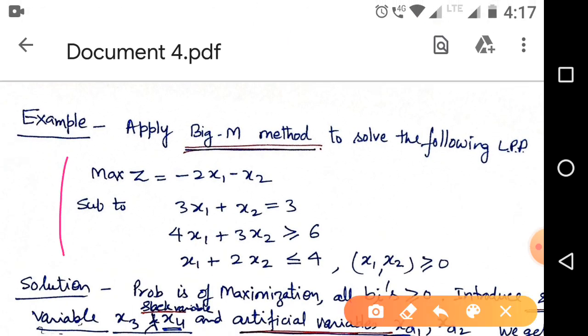Here, maximize Z equal to minus 2x1 minus x2, subject to constraints: 3x1 plus x2 equals 3, 4x1 plus 3x2 minus x3 equals 6. In this problem, we have first constraint equal to sign, second constraint greater than sign, and third constraint less than equal to sign.